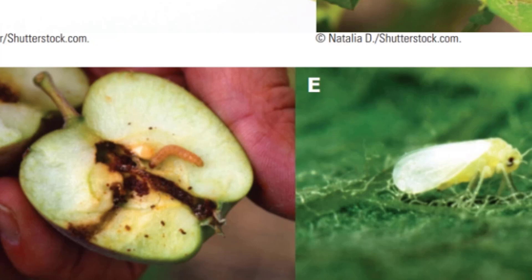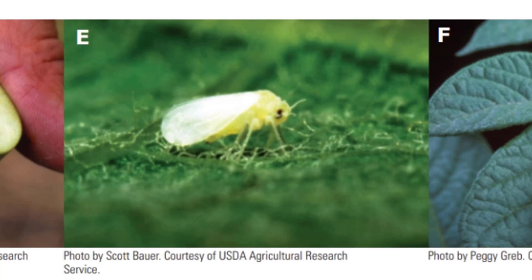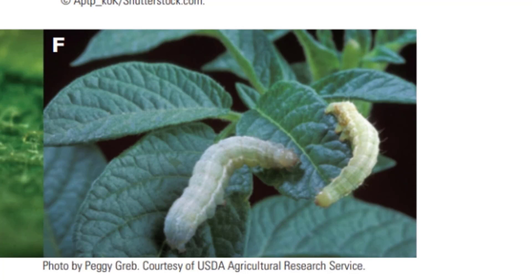Whiteflies attack a variety of garden plants including tomatoes, potatoes, geraniums, fuchsia, gardenias, and many others. Many whiteflies have developed resistance to pesticide. The cabbage looper is one of the most common garden caterpillars; the larvae make holes or completely devour plants in the cabbage family and many other garden species.